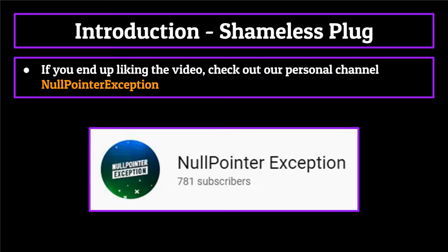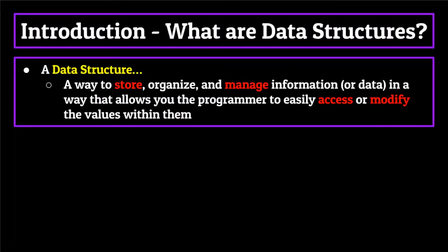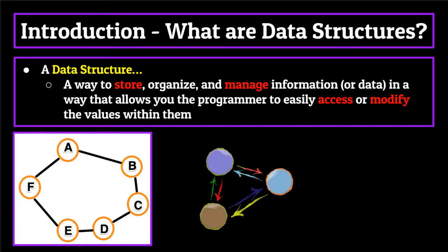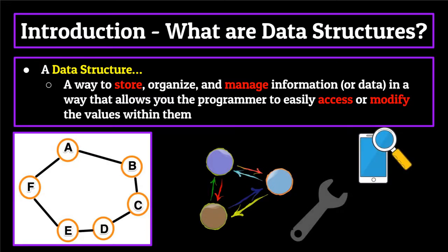With my shameless plug out of the way, we're finally ready to tackle the topic of data structures. In this introduction segment, we'll simply cover a general overview of what data structures are, and then go over what type of information will be covered throughout the duration of the series. So the obvious question to start with is: what exactly is a data structure? In computer science, a data structure is a way to store, organize, and manage information or data in a way that allows you the programmer to easily access or modify the values within them. Essentially, it's a way for us to store a set of related information that we can use for our programs.